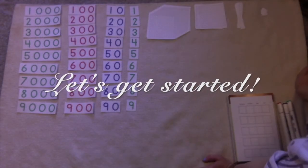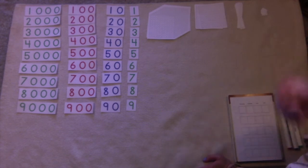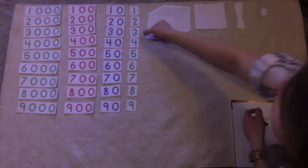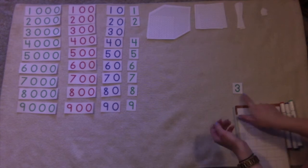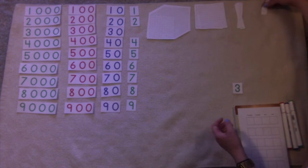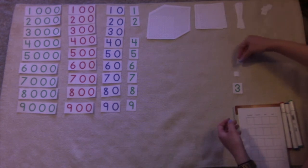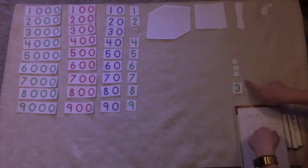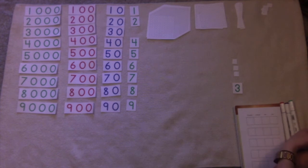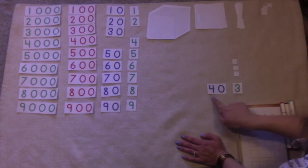Alright, so to get started we're going to do these number categories one category at a time. So for example, I would bring over a numeral and I would say to the child, can you go and get this many units? They would go to wherever the bank is and bring back one, two, three. That's right, you brought back three units. Now can you fetch this many tens? Four tens.